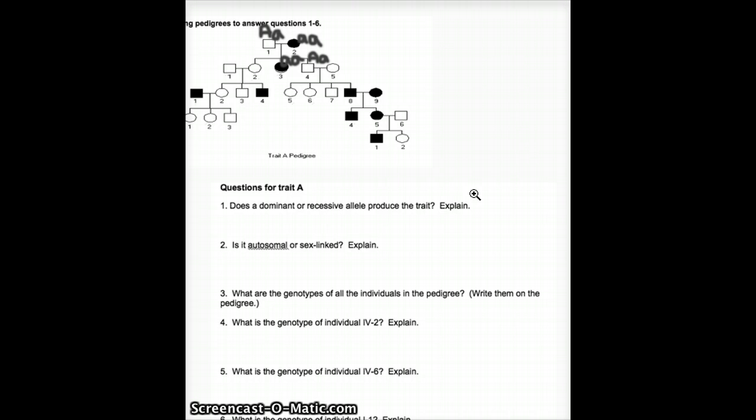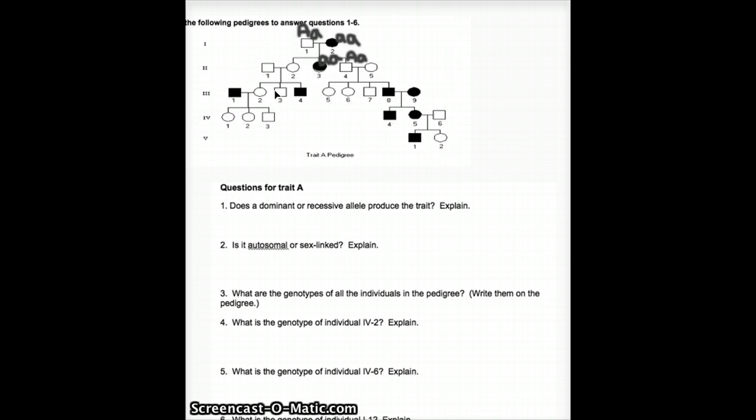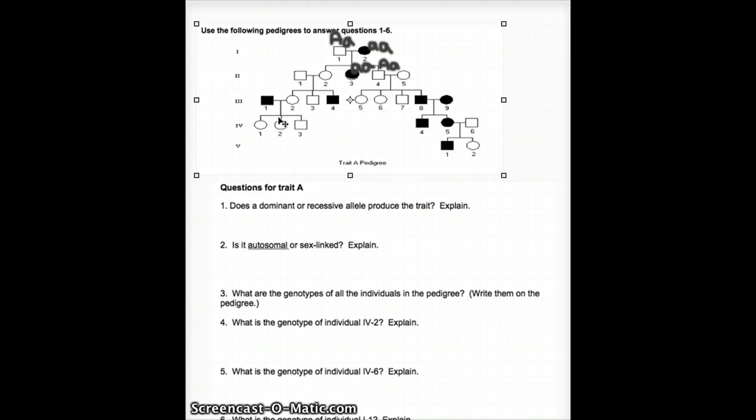The next question says, what is the genotype of individual 4-2? Individual 4-2 is right here. We have generation 4, number 2. So, this is individual 2 right here. If you look at her parents, the mom is either homozygous dominant or heterozygous. We don't really know which one. The dad is homozygous recessive. In order for number 2 not to have the trait in question, she has to be heterozygous. She gets one recessive allele from her dad and one dominant allele from her mom. So, individual 4-2 has to be heterozygous.